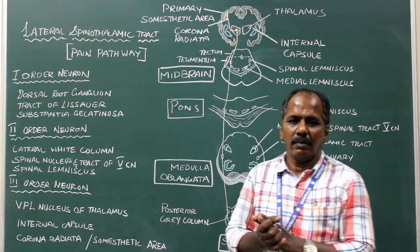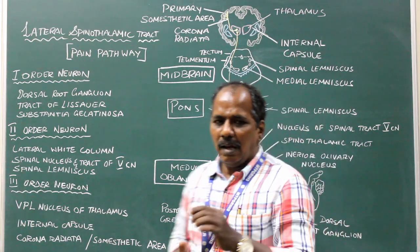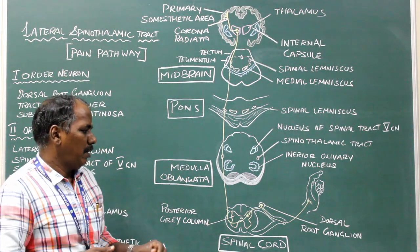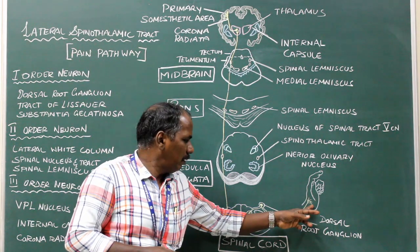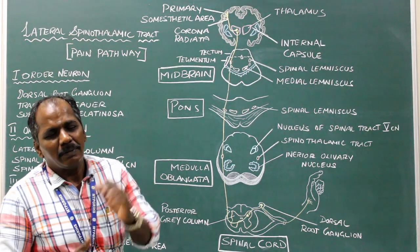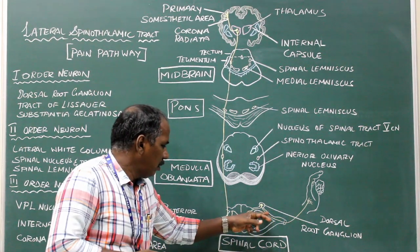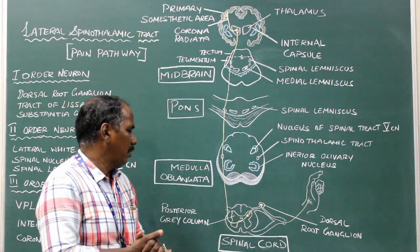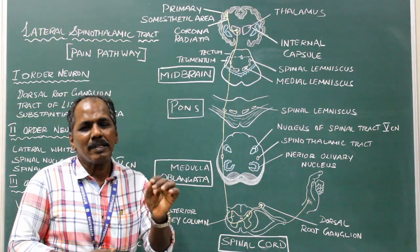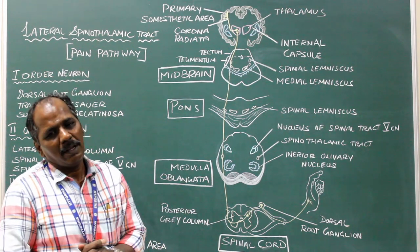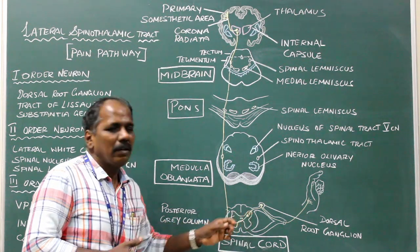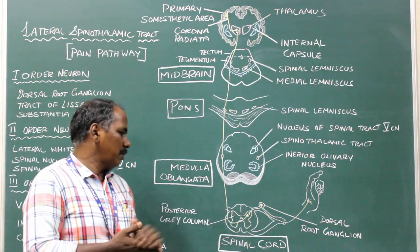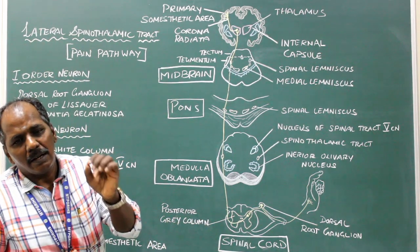Ventral spinothalamic tract carries crude touch and pressure. The free nerve endings present in the skin receive crude touch and pressure, which pass through the dorsal root of the spinal nerve and reach the spinal cord. In the spinal cord, it ascends or descends one or two segments as the dorsolateral tract of Lissauer, and synapses in the posterior grey horn, including the substantia gelatinosa. This is the first order neuron of the ventral spinothalamic tract.